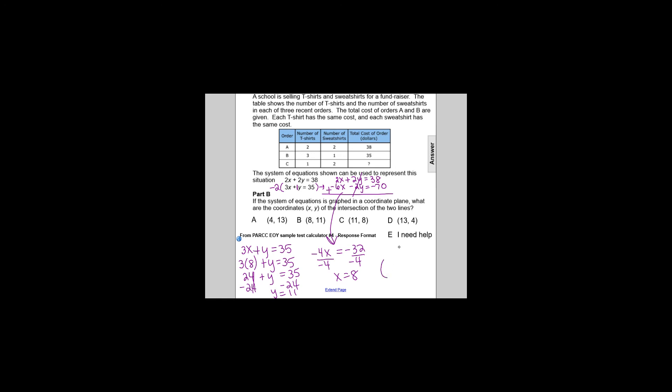our ordered pair, our solution to this system will be (8, 11). So the ordered pair, the coordinates of the intersection of these two lines on the coordinate plane, would be answer choice B, (8, 11).